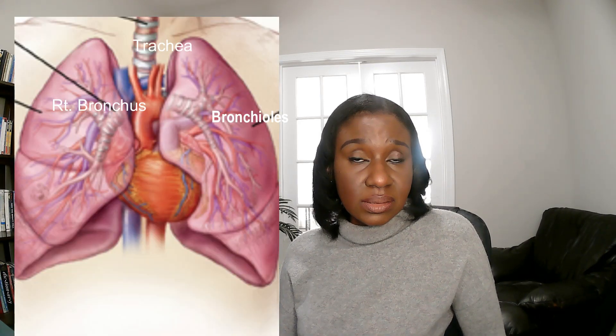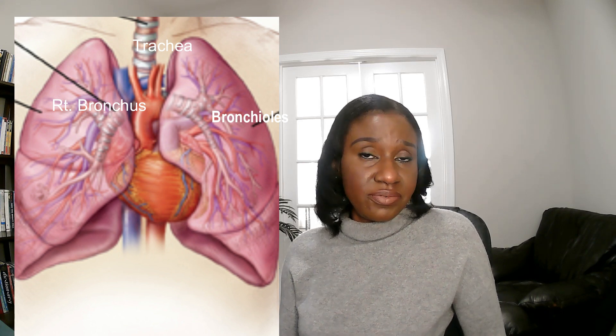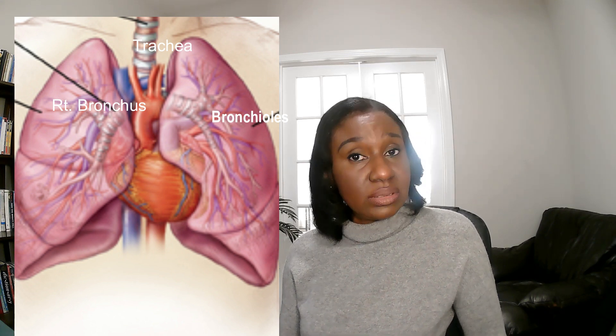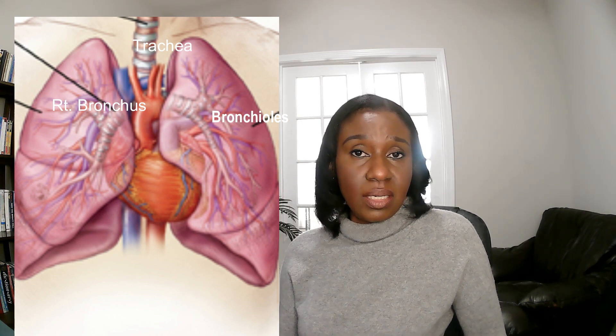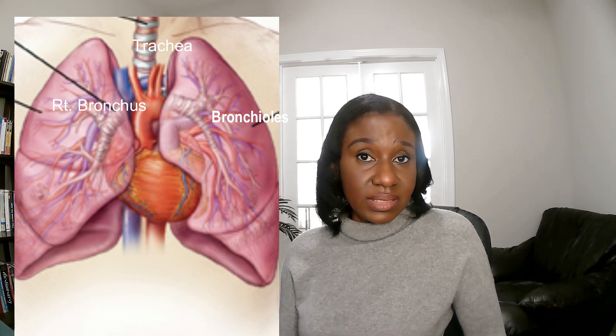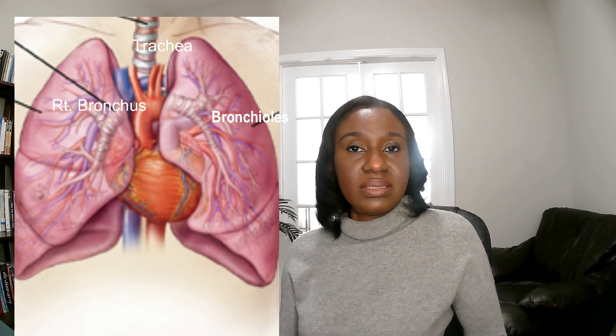These alveolar sacs are air sacs which are the terminal sites of branching passageways called bronchioles. The bronchioles are branches that start from the trachea, which further divides into a left and right bronchus feeding the left and right lungs. These then further divide to form the various bronchioles, so that every part of the lung is fed by bronchioles that terminate in the alveolar sacs.